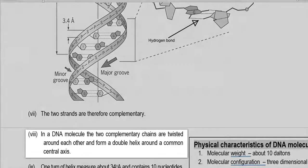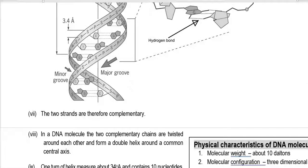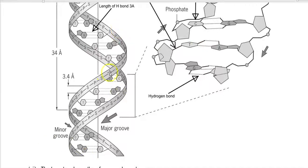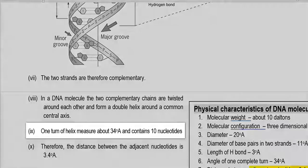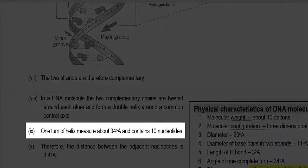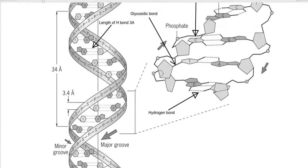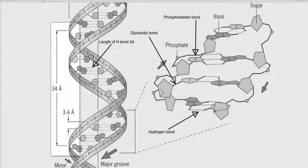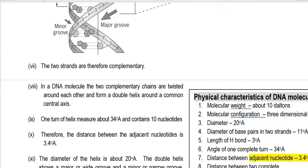That is complementarity. In a DNA molecule, the two complementary chains are twisted around each other and form a double helix around a common axis. One turn of the helix measures about 34 Angstroms and contains 10 nucleotides. Therefore, the distance between adjacent nucleotides is automatically 3.4 Angstroms in length.